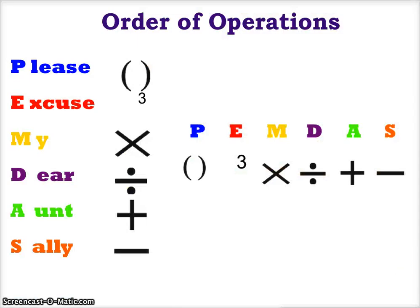We remind ourselves that the order of operations rules include PEMDAS — 'Please Excuse My Dear Aunt Sally' as your mnemonic. P is for parentheses, which represents grouping symbols like parentheses and brackets. Exponents are next, then multiplication and division moving left to right, followed by addition and subtraction, again moving left to right.